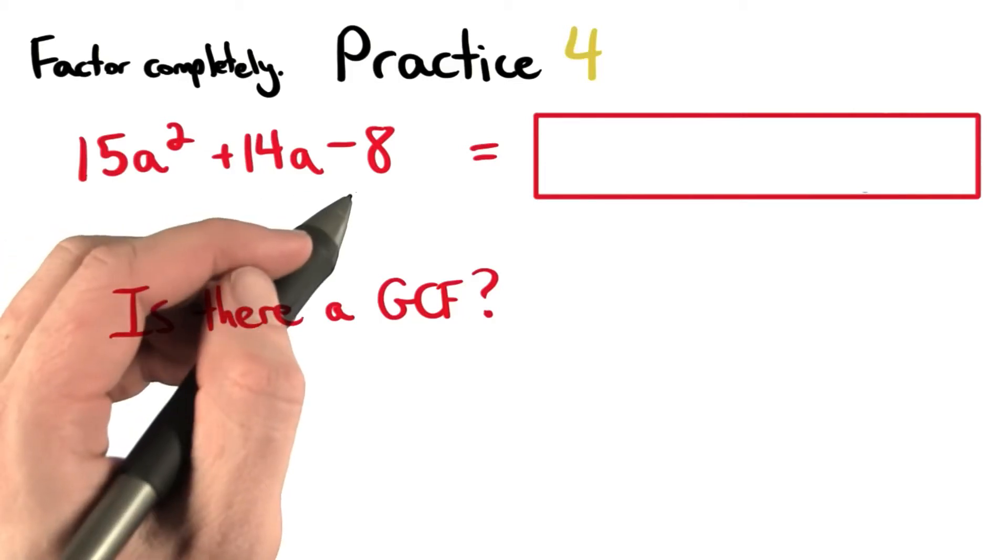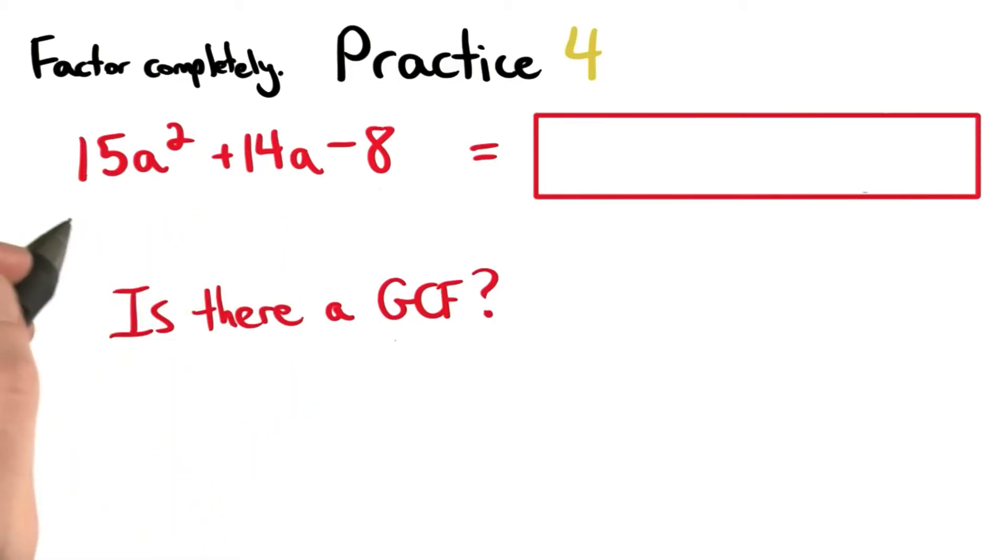First, we want to check to see if there's a greatest common factor other than 1. 1 is the greatest common factor for all three terms, so we don't need to factor anything out.